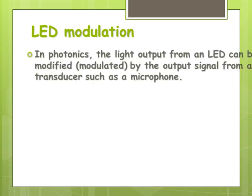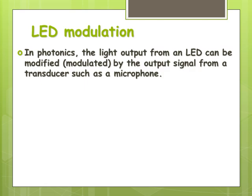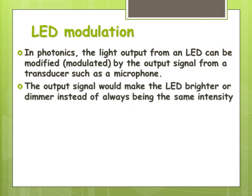In terms of LEDs, we can easily modulate the light from that for a signal from some other transducers such as a microphone. If we wanted to do it as analog, you'd basically just be making it brighter or dimmer instead of always sending light of the same intensity. So the light would actually be a carrier then for the original signal from the microphone.